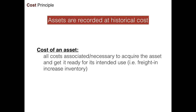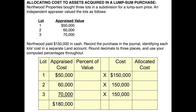So let's look at this idea of recording a lump sum. For example, if you like the TV show Storage Wars, those people go out and buy storage units packed full of stuff — how do they record those items on their books, the stuff they decide to keep? We're going to need to allocate the cost to all those different items. Here we have an example: Northwood Properties bought three lots in a subdivision for a lump sum price.